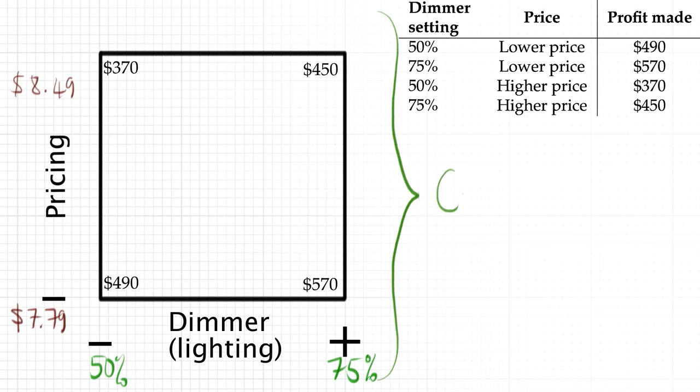We call this a cube plot. Later on, when we have three factors, you will see it really is a cube. So, 490 is written at the bottom left because that was the outcome profit when we used low lighting and had lower prices. We add the 570 at the lower right, 370 at the top left, and finally 450 at the top right.